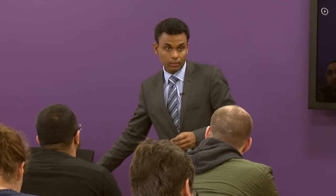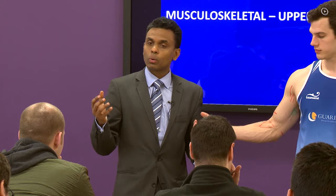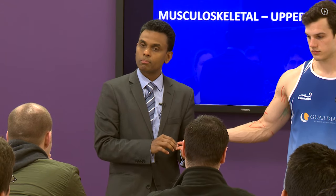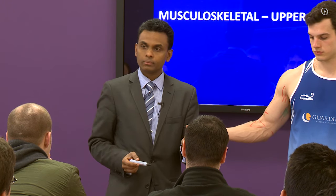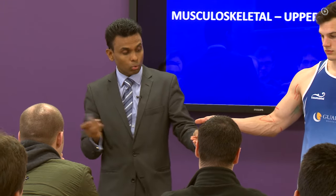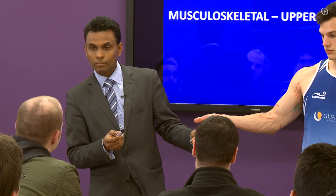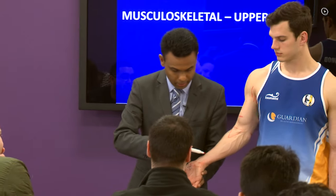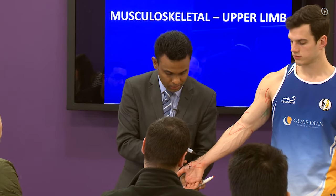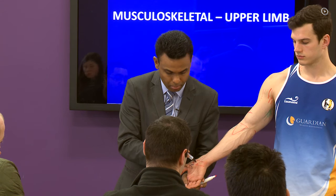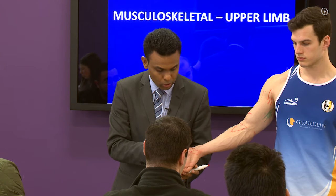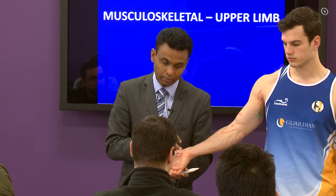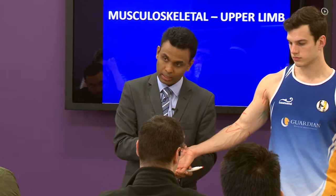In carpal tunnel syndrome, the classical feature is tingling and numbness in the lateral three and a half digits. However, sensation over the thenar eminence is spared — because approximately five centimeters proximal to the wrist crease, the palmar cutaneous branch of the median nerve arises and runs over the retinaculum. If sensation over the thenar eminence is lost postoperatively, you have iatrogenically damaged this branch.